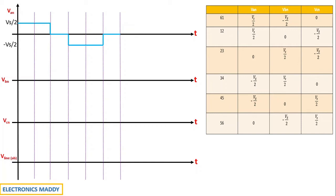For Vbn, observe the Vbn column. It starts from minus Vs/2, then goes to 0, then rises to plus Vs/2, remains at plus Vs/2 for the next interval, then goes to 0 again, and then drops back to minus Vs/2.